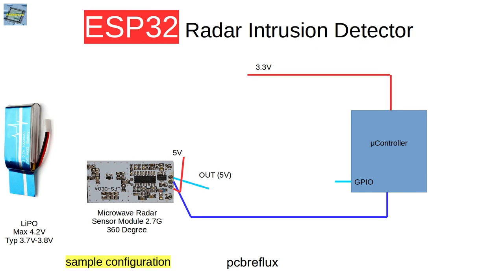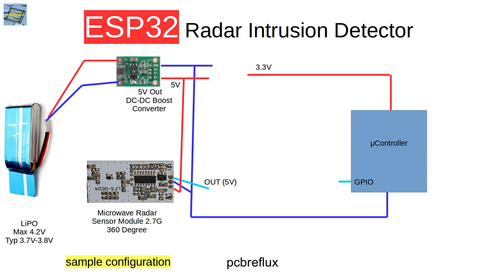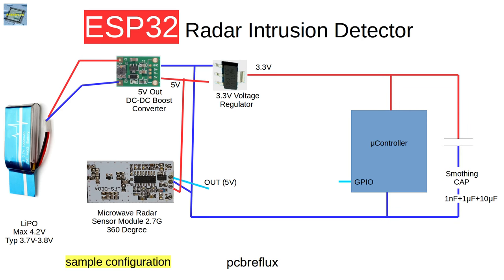First start with the LiPo battery and the radar sensor and also our microcontroller. Because our LiPo battery puts out maybe 3.7 volts at average and at maximum 4.2 volts, we need a boost converter to boost up the voltage to 5 volts to run our sensor. And the next step is to run our microcontroller. And the ESP32 needs 3.3 volts.